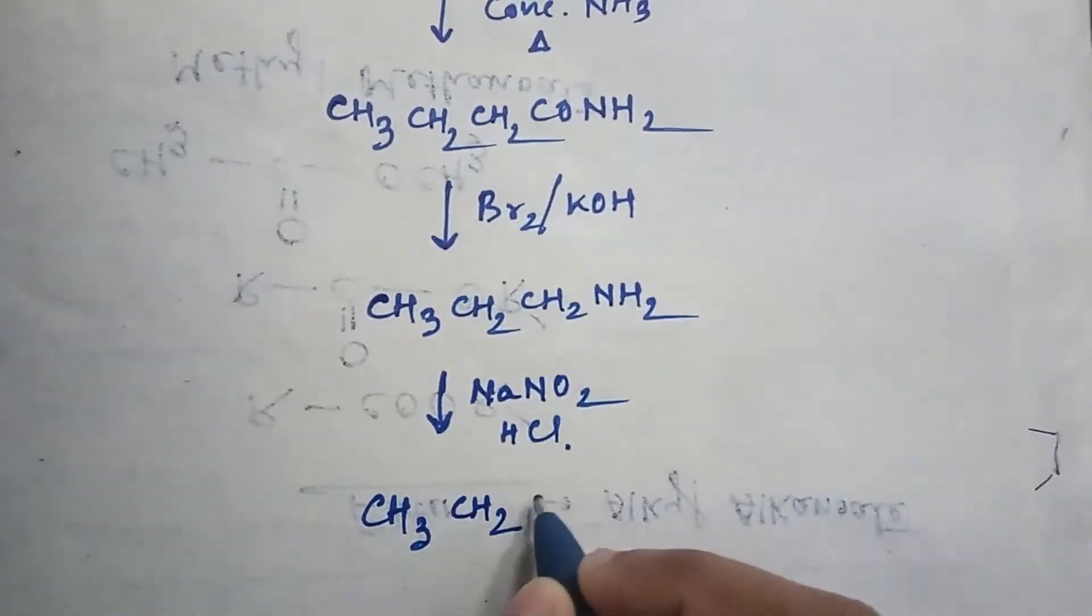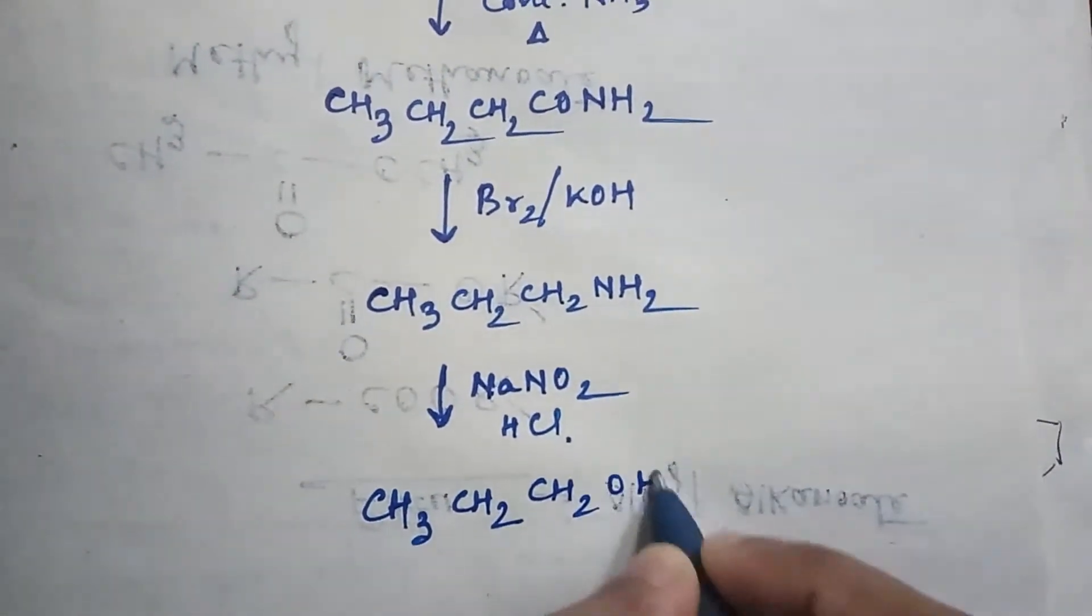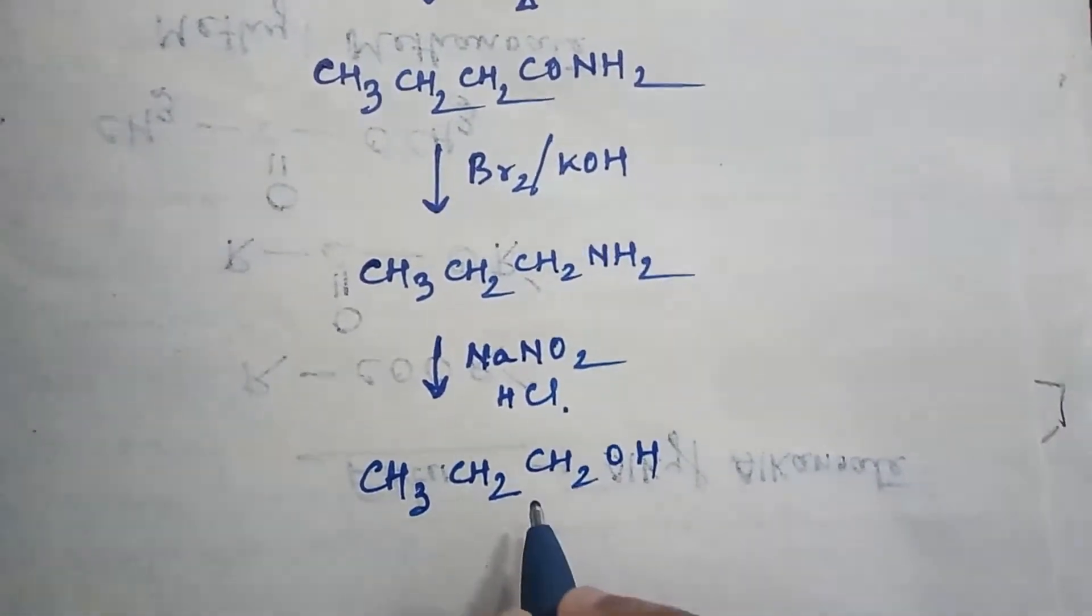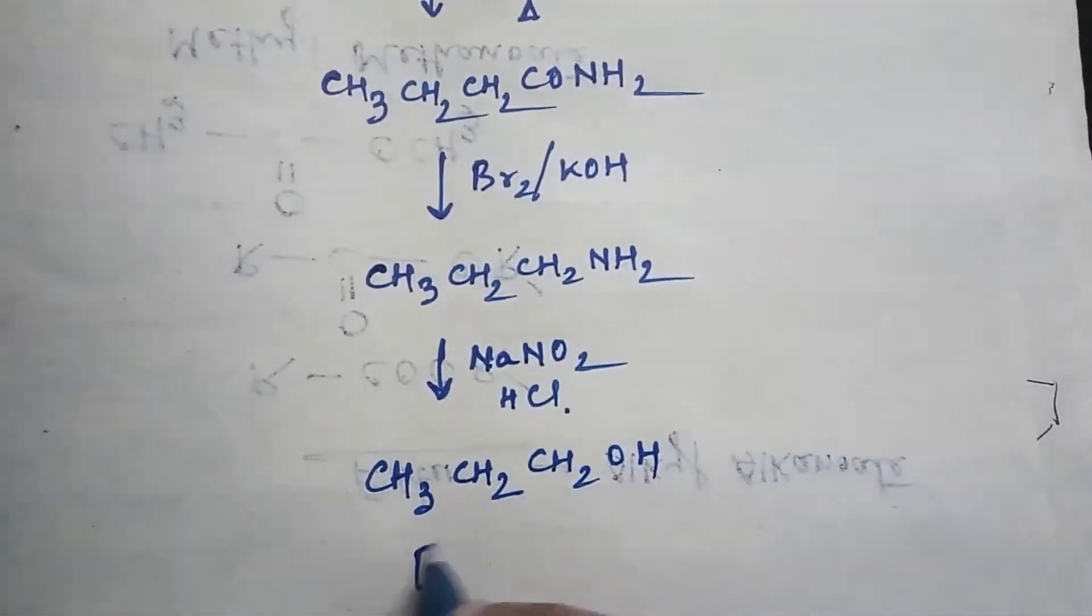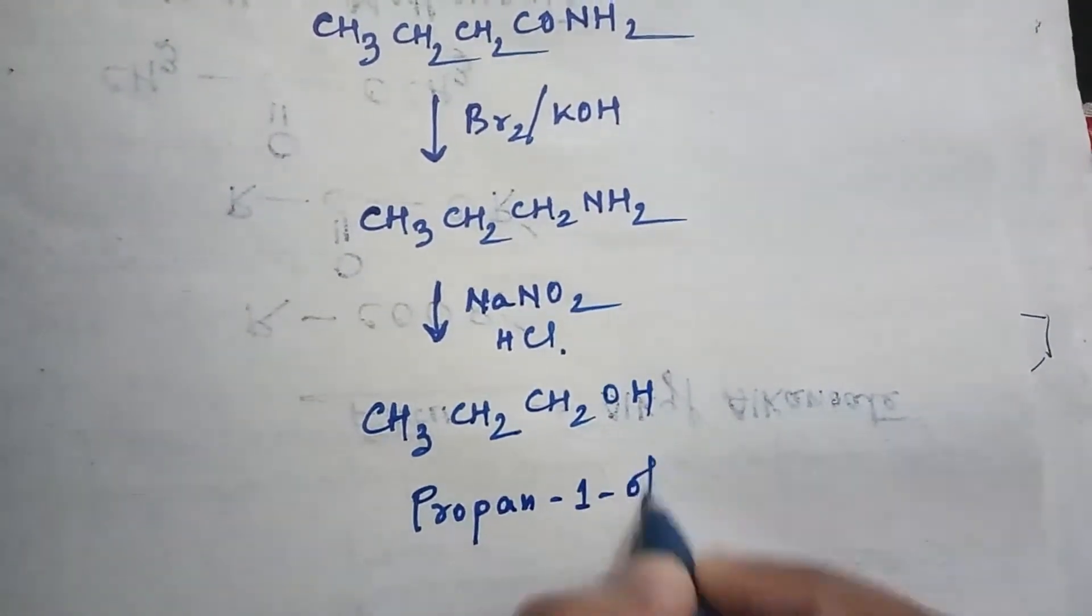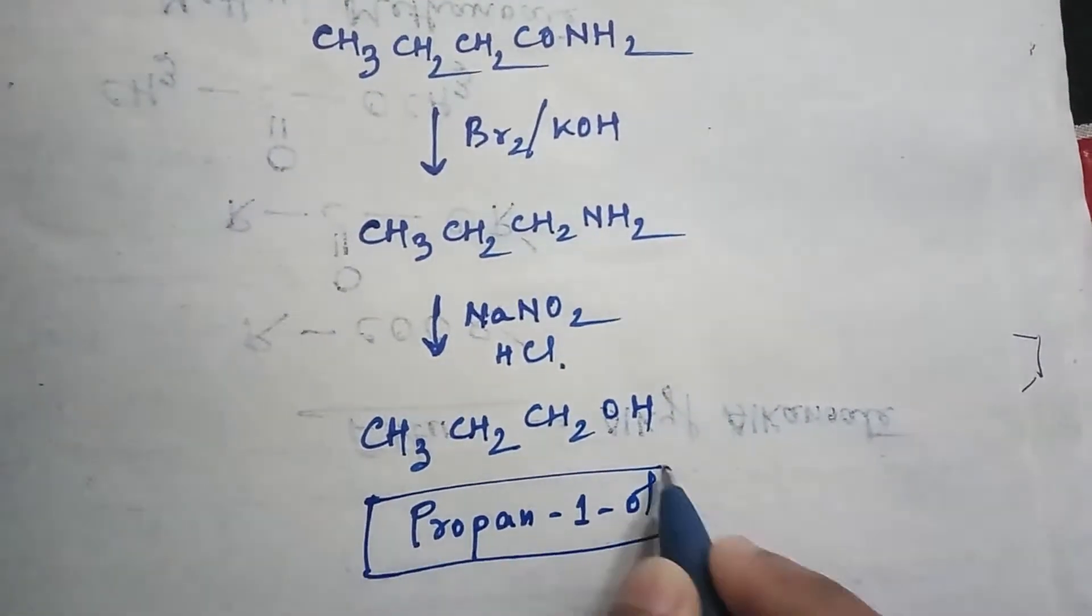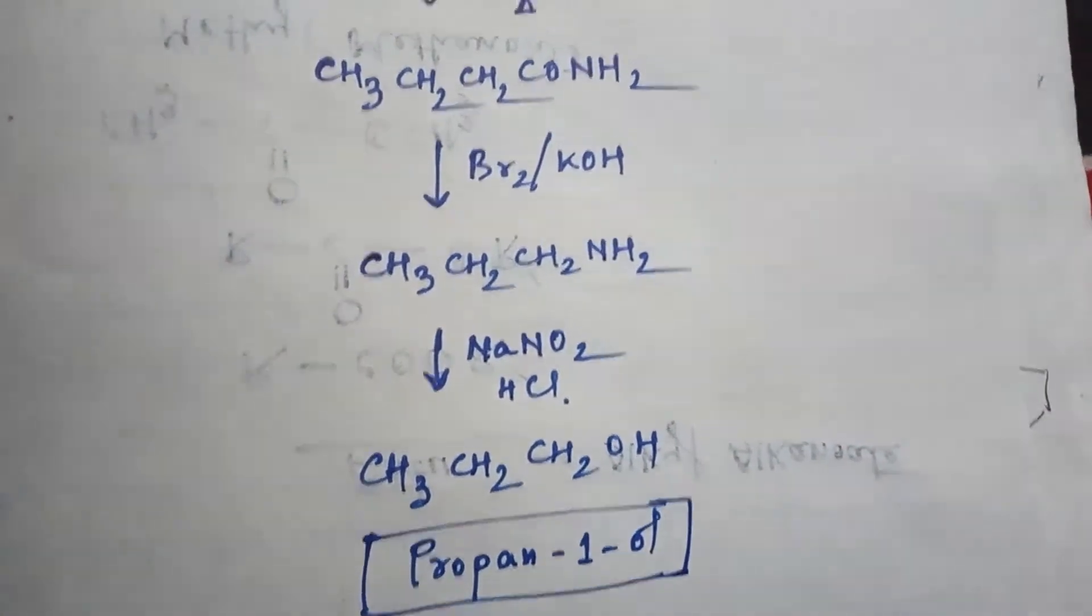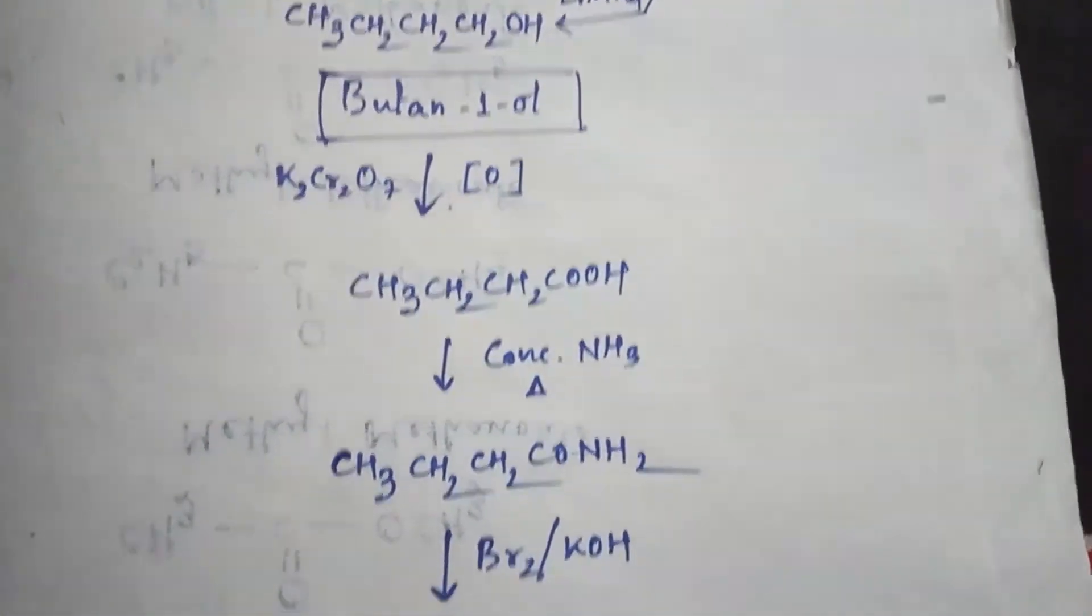The product will be CH3-CH2-CH2-OH. Now you can see this is propane-1-ol, so you are again getting propane-1-ol from butane-1-ol.